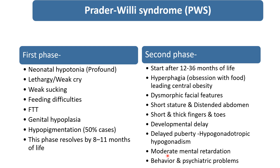They also have moderate mental retardation, behavioral problems, and psychiatric problems. Because of the obesity, the third phase starts around 5 to 7 years of age and persists into adolescence. The fourth phase starts after 30 years of age during adulthood. During the third phase, the child will develop complications of obesity: hypertension, diabetes, and hypothyroidism can also be present.